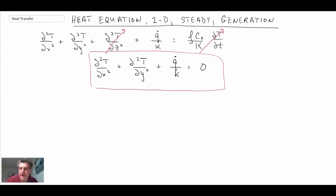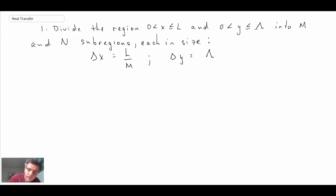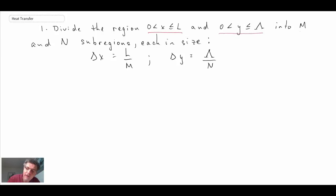As mentioned in the last lecture, this is a multi-step process. The first step is grid generation. Our region goes from 0 to L in the x direction and 0 to capital Lambda in the y direction. We divide those into m and n sub-regions, from which we determine our grid spacing, delta x and delta y, as shown. With that, we have m plus 1 by n plus 1 nodes.